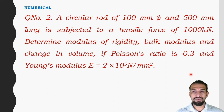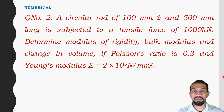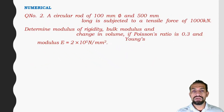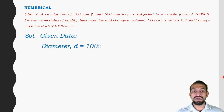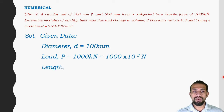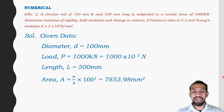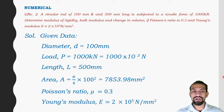Numerical two: a circular rod of 100 mm diameter and 500 mm long is subjected to a tensile force of 1000 kilonewton. Determine modulus of rigidity, bulk modulus, and change in volume. Given: Poisson's ratio μ = 0.3 and Young's modulus E = 2 × 10⁵ N/mm².